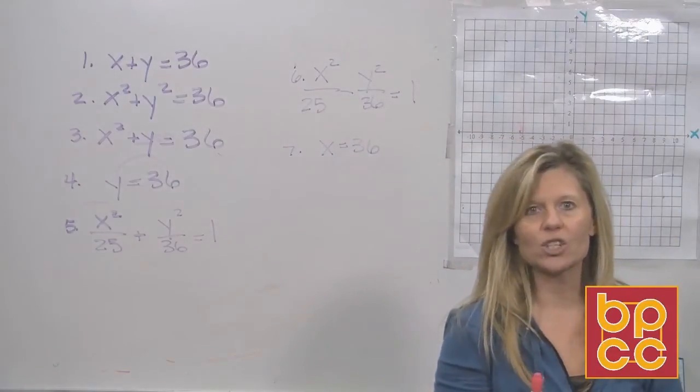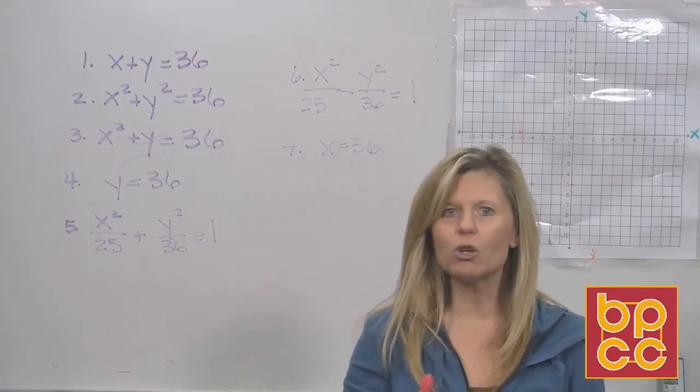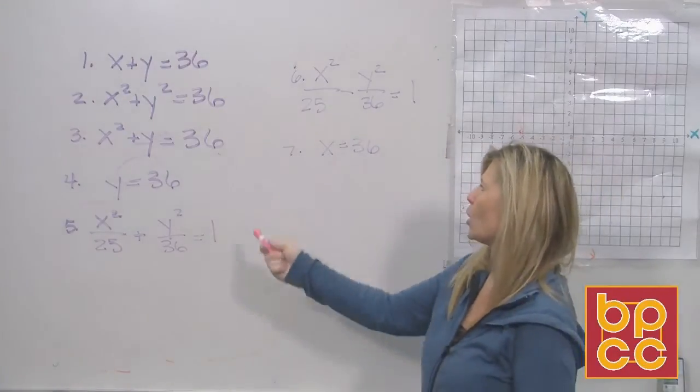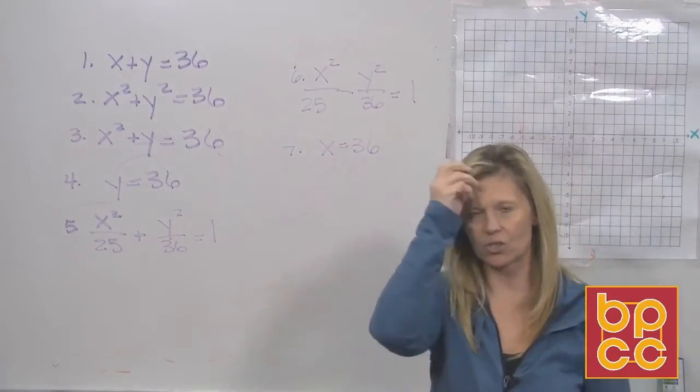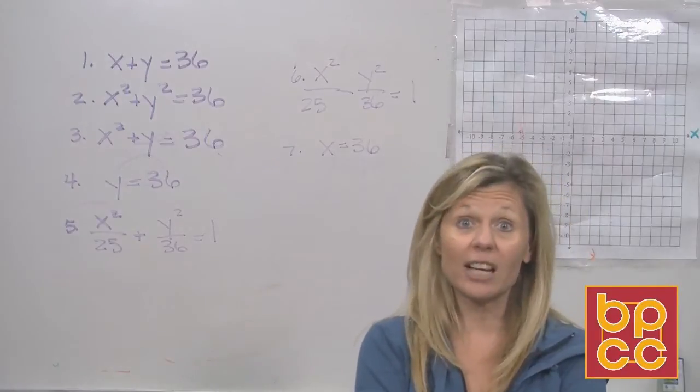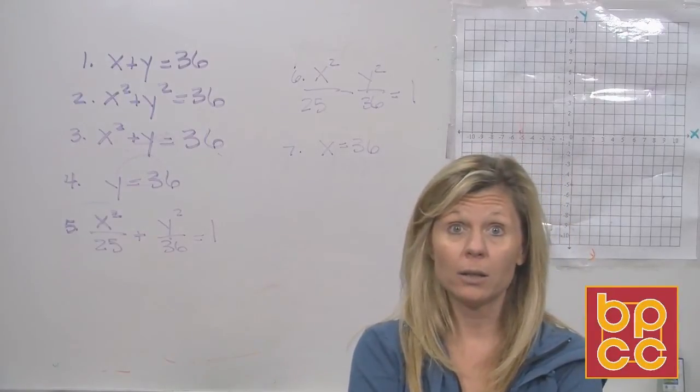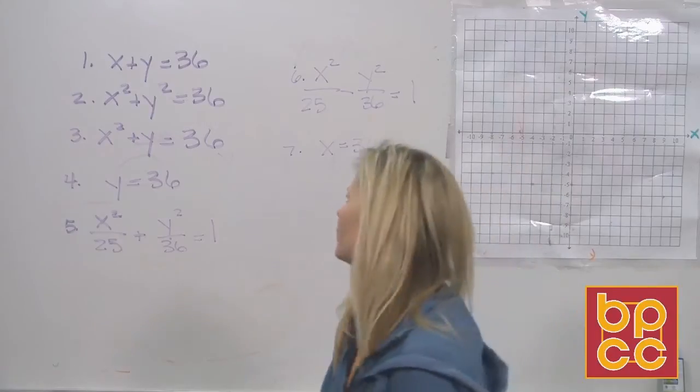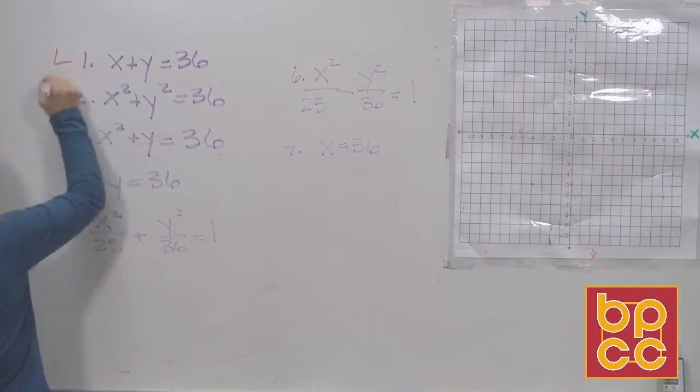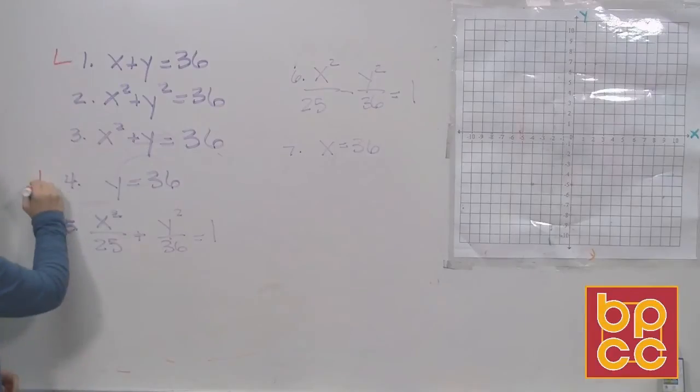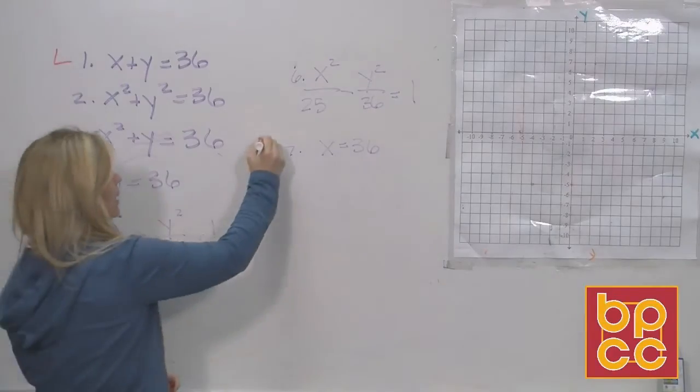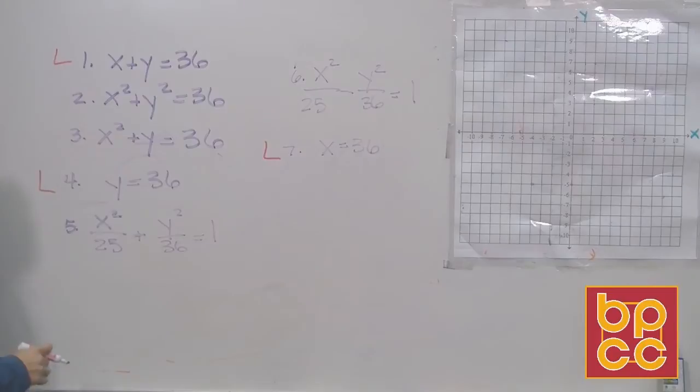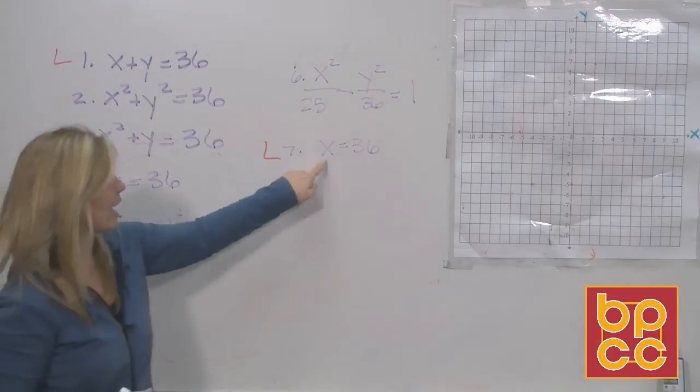Linear equations make pictures of lines. So the first thing you should be able to do is go through and pick out which ones are the linear equations. Your definition of linear from module one is an equation that has exponents of one. So here is a linear equation. Here is a linear equation. Here is your linear equation. X and Y to the first. Y to the first. X to the first.